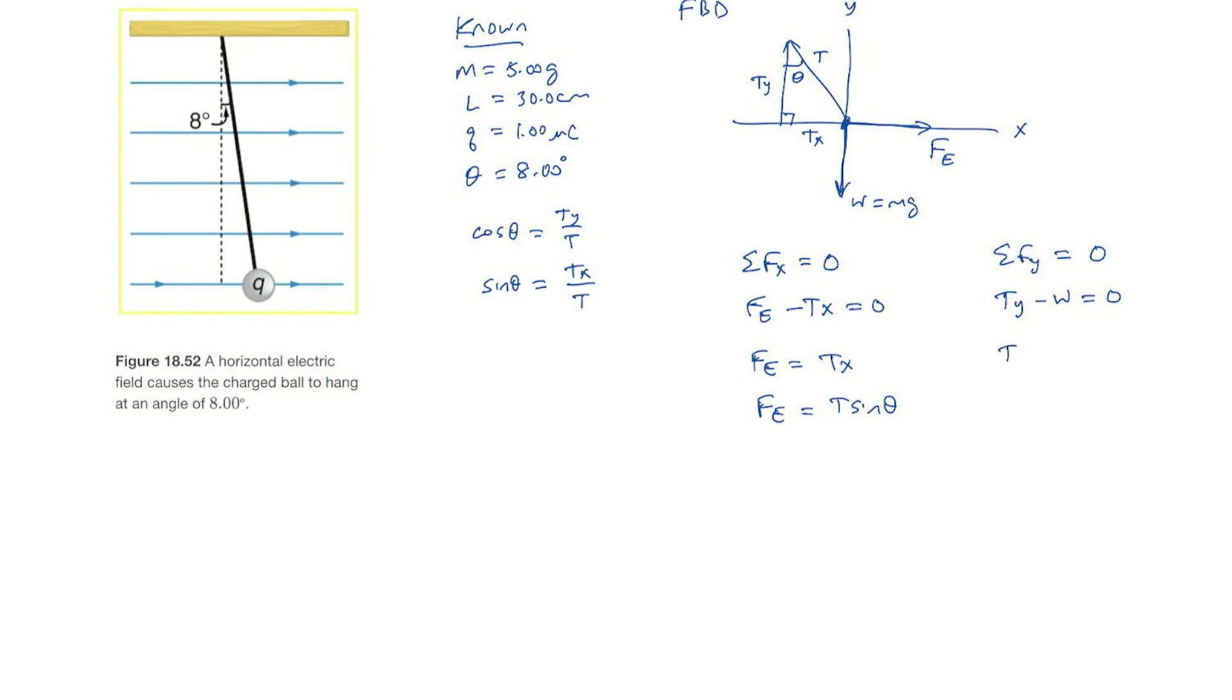ty is t cosine theta. We can put the w to the other side, and so t cosine theta is mg.